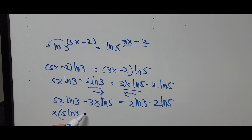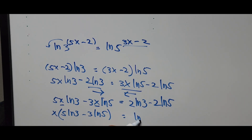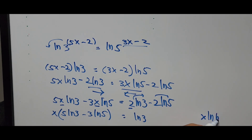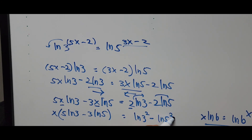The right side is ln of 3 minus 2 times ln of 5. Applying the power rule — x ln of b equals ln of b to the power x — we rewrite the right side as ln of 3 to the power of 2 minus ln of 5 to the power of 2.